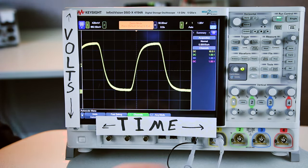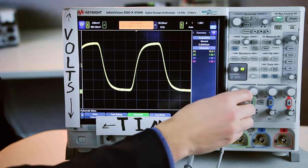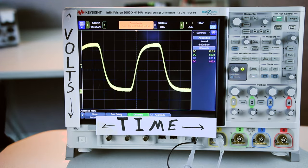So as a beginner, I recommend using the autoscale button to get close and then using the knobs to scale and tune the signal to be precisely what you want to see.